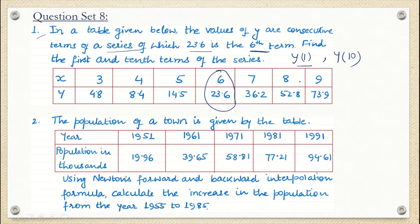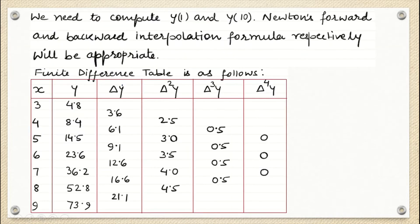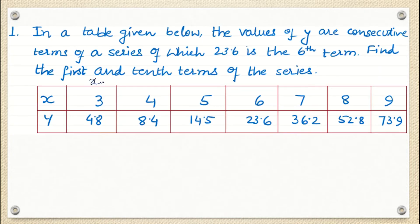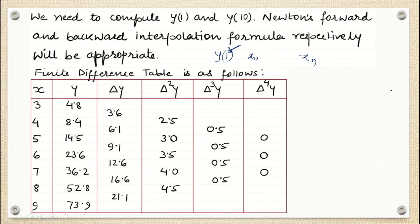To solve this question, if I have to find y1, the method is the same: I have to check whether point 1 is near to x naught or near to xn. Since 1 is near to x naught, we are going to use Newton's forward interpolation method to find y1. And since 10 is near to 9 (which is xn), we are going to use Newton's backward interpolation formula to find y10. To get y1 we use Newton's forward interpolation table, as indicated by the upside triangle.